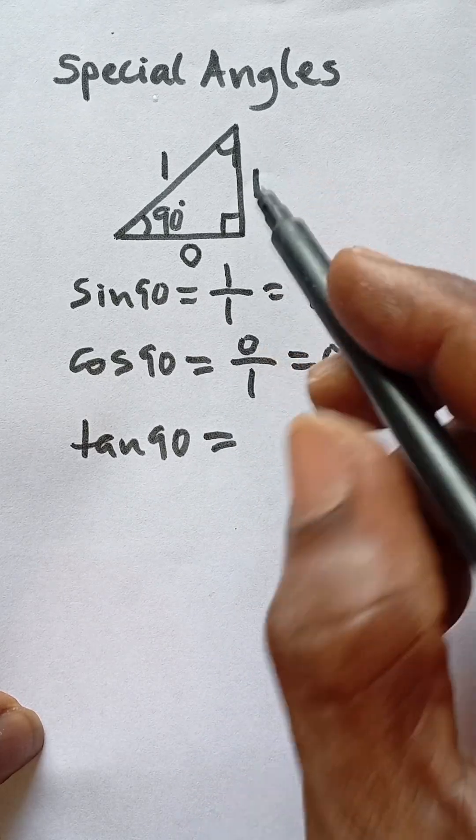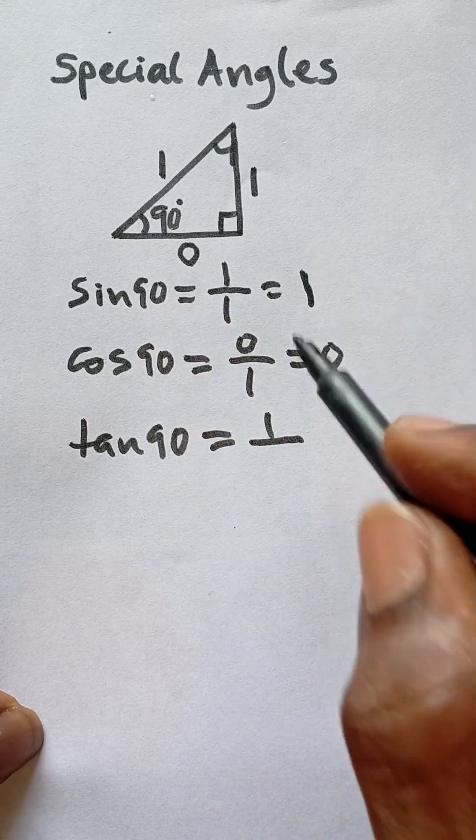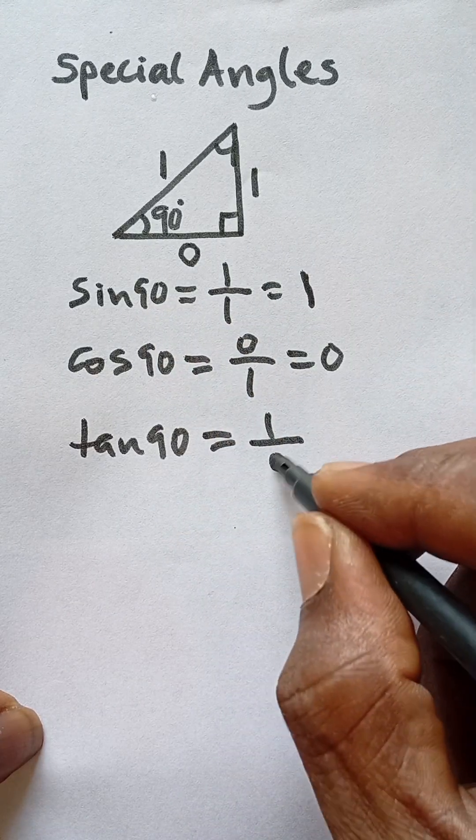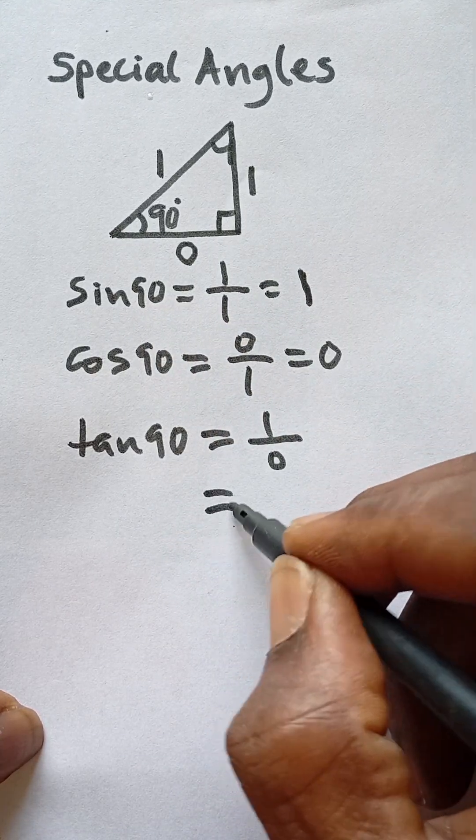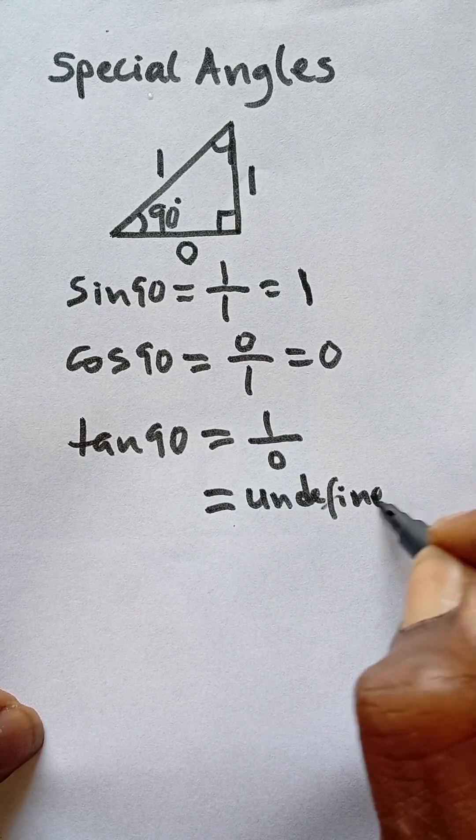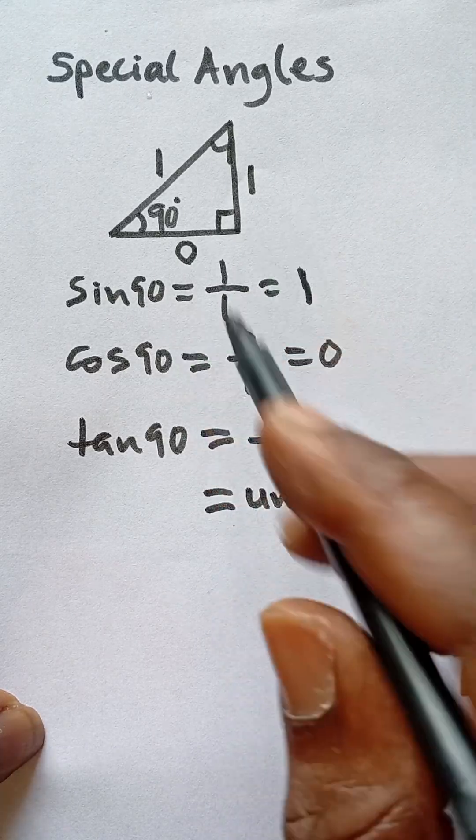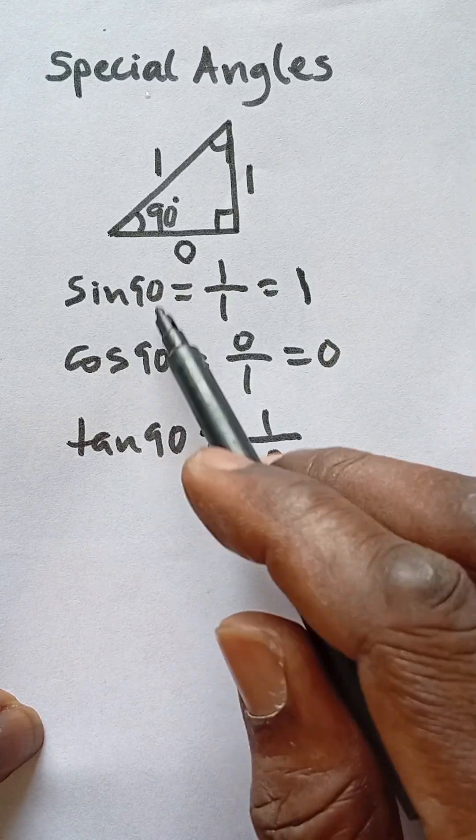The opposite side, which is one, all divided by the adjacent, which is zero. That tells us that tan 90 is undefined, because one divided by zero is undefined. This is the simple trick for remembering sine 90, cos 90, and tan 90.